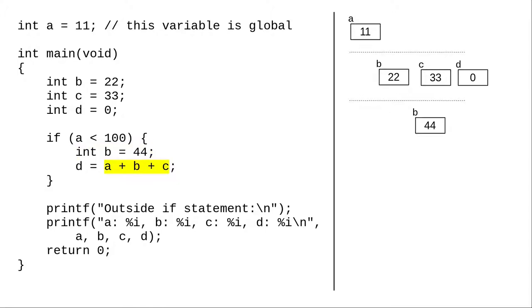Now the program evaluates the right-hand side of the assignment. A isn't in the current scope, so we look at the enclosing scope. It's not there either. We go up to the global scope and find variable A with value 11.